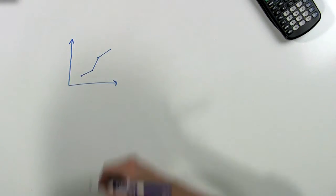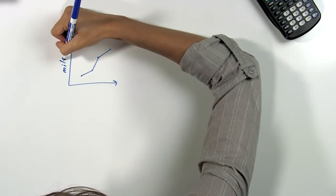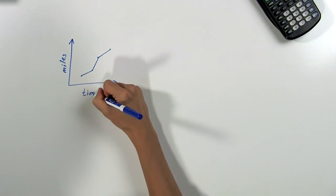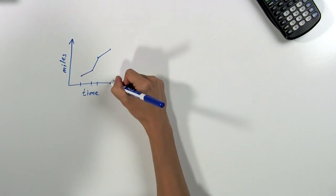For example, if we have the miles that a ship has traveled on this side, and the time that the ship has been traveling on this side, with markers at each of those dots,